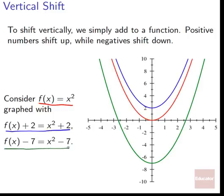If we take a function and add 2 to it, it gets raised by 2 units. But if we subtract 7 — f(x) − 7, which is x² − 7 — it goes down by 7. Normally x² has its home base at (0, 0); we can drop it down or raise it up using this vertical shift.